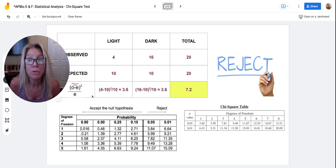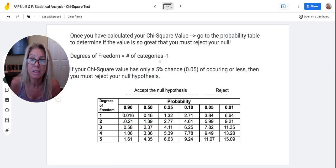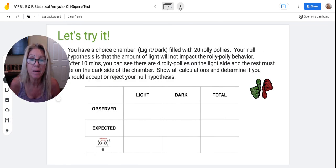Well, so now we need to do degrees of freedom and your degrees of freedom is always the number of categories minus one. So how many categories did we have? We have two, we had light and dark. Those were our two categories minus one means I have one degree of freedom. So let's go look at our table.